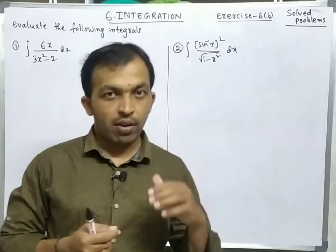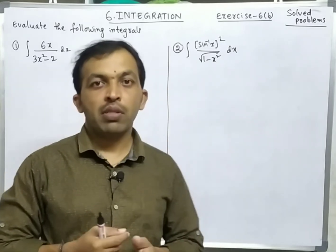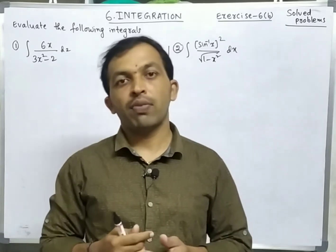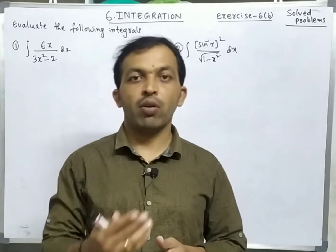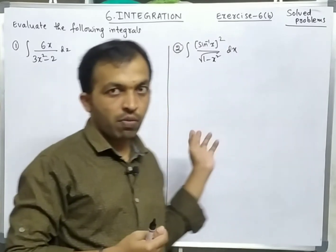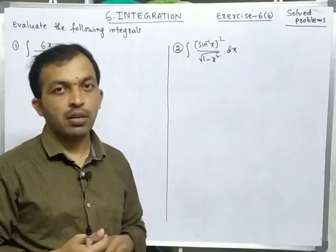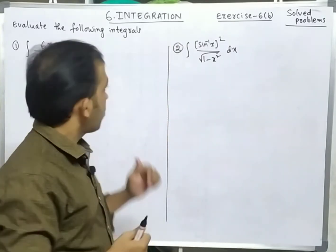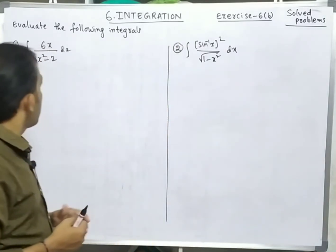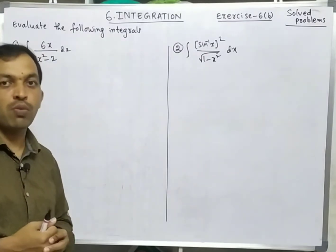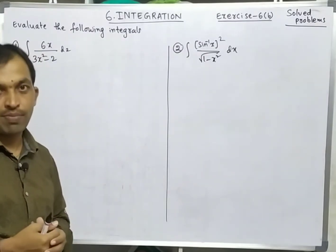Now I will write the problems — try yourself first, and if you don't get it, then follow the method. First problem: integration of 6x divided by (3x² - 2) dx.